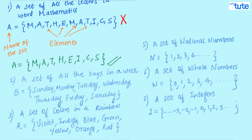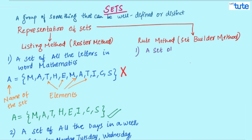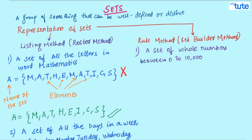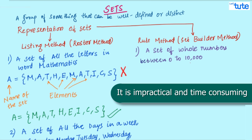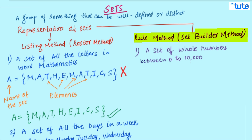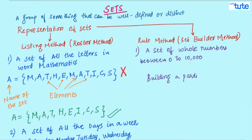Now what happens if I ask you to form a set of all the whole numbers between 0 to 10,000? Can we use this listing or roster method to list all these whole numbers till 10,000? No, right? Hence, we have this rule method or set builder method. Now, since we are building a particular set, instead of writing all the elements in the set, this is known as a set builder method.